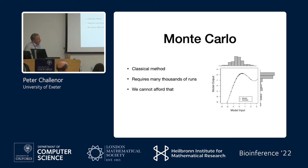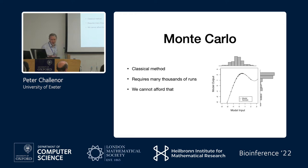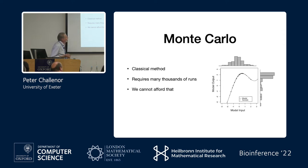Monte Carlo is the classic way of propagating uncertainty through some model — I'm going to include Markov chain Monte Carlo in all its flavours under that umbrella. Monte Carlo requires many thousands of runs; even the best MCMC requires a lot of computation. And if you've got a model that takes six hours to run — some climate models I work with take a month to run — you just can't do that. Of course, we can do Monte Carlo with my emulator, and that's what we're going to do some of the time.